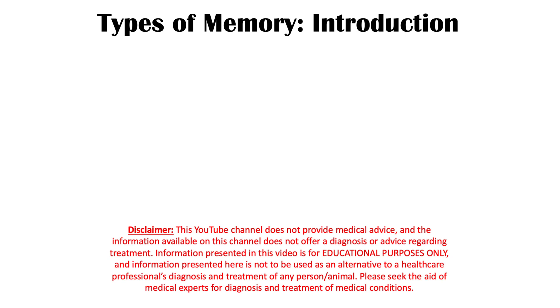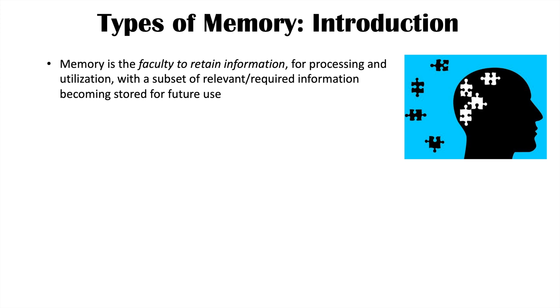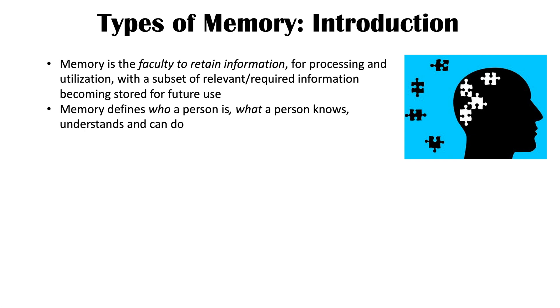This lesson is on types of memory, so we're going to talk about what memory is and the different types of memory and their roles in cognition and experience in life. Memory is the faculty or ability to retain information for processing and utilization, with a subset of relevant required information becoming stored for future use. Memory really defines who a person is, what a person knows, understands, and can do — so who we are and what we know is based on what we remember from the past.